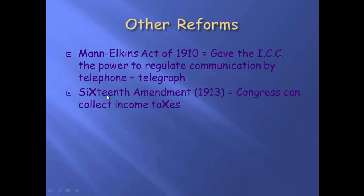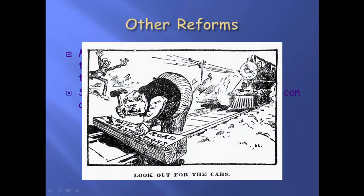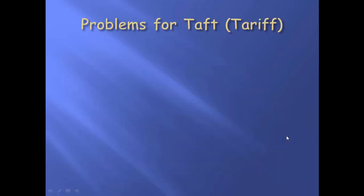The 16th Amendment was proposed by Congress under William Howard Taft. It doesn't happen until 1913, but he does propose it. The 16th Amendment says that our Congress, our federal government, can collect income taxes. The Mann-Elkins Act and the ICC would tell railroads what they can and can't do.